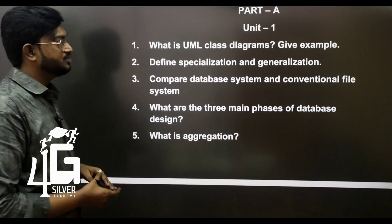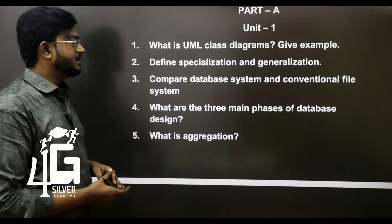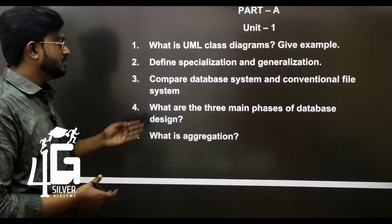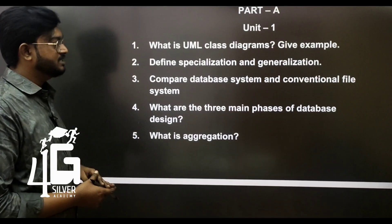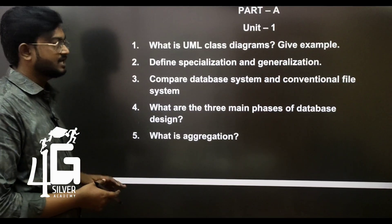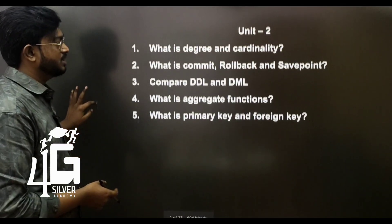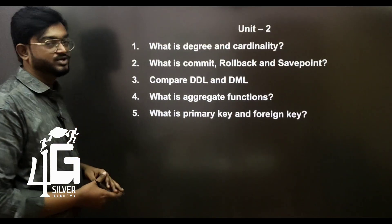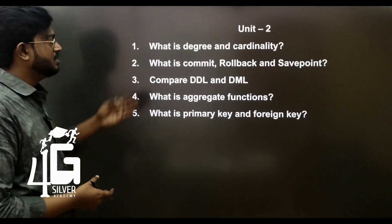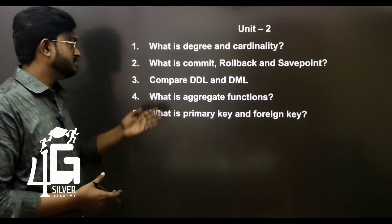Define specialization and generalization. Compare database system and conventional file system. What are the three main phases of database design? What is aggregation? Next, Unit 2 Part A questions: What is degree and cardinality? What is commit, rollback, and save point?